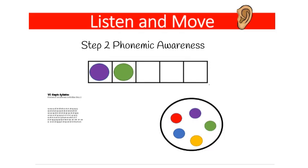Remember, you're not asking the student to write anything or even say the letter names — just identify that they've heard two sounds. In the last picture I said 'app,' now I've said 'at.' I've changed the second sound, so the second color has changed and they changed the second marker to show that change in sound.